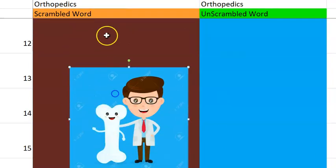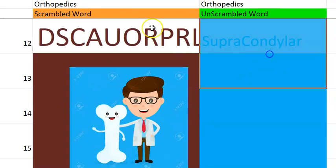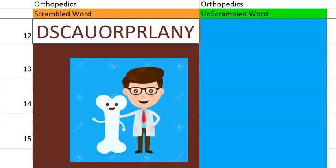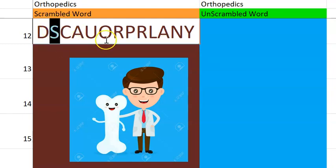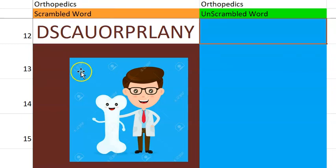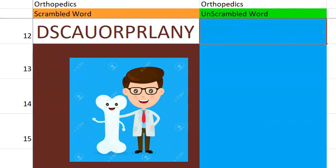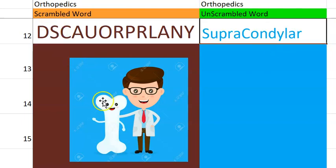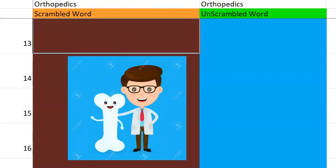Let's go to the twelfth one. What do you think this one is? It's a huge word made up of two things: one is S and the other one is C. So it is supra-condylar. Part of the bone, condyle — supracondylar.